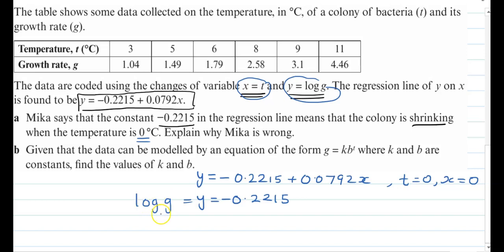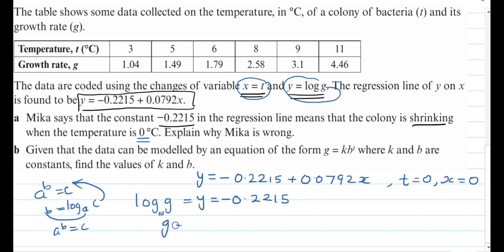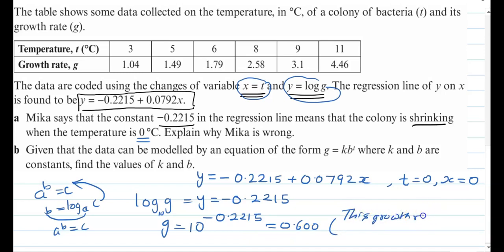Since log is base 10, we use the rule a^b = c ↔ b = log_a(c) to go from logarithmic form back to exponential form. So G = 10^(−0.2215). When you put this in a calculator, 10^(−0.2215) = 0.600 (to three significant figures). So this growth rate is positive. Mika is wrong — the colony is not shrinking.